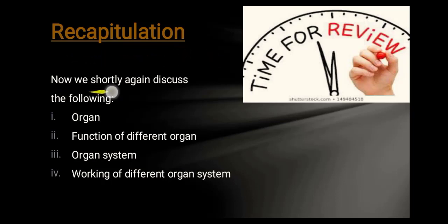Recapitulation: we will briefly discuss again the following. An organ is a group of the same type or different types of tissue that perform a specific function. When a group of tissue performs a specific function, it is called an organ.